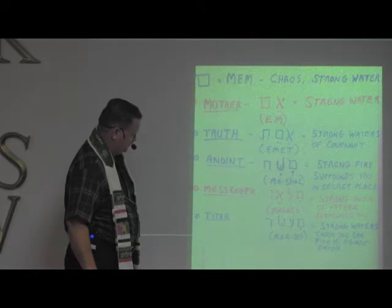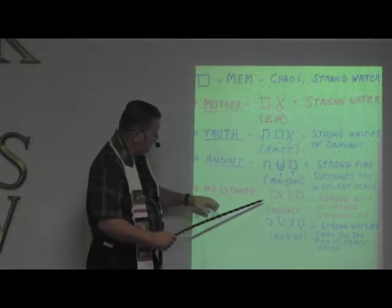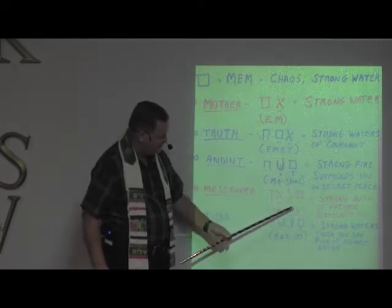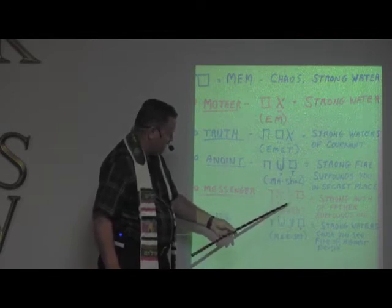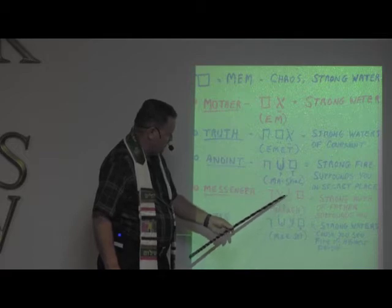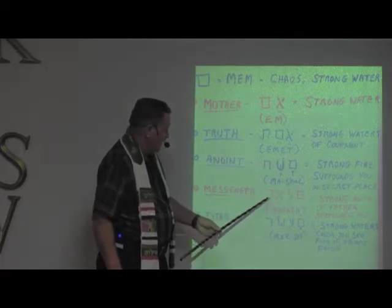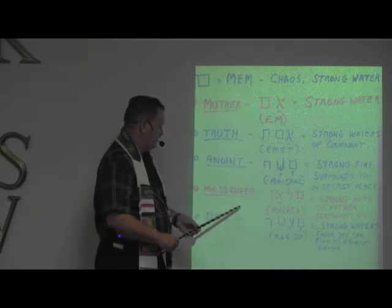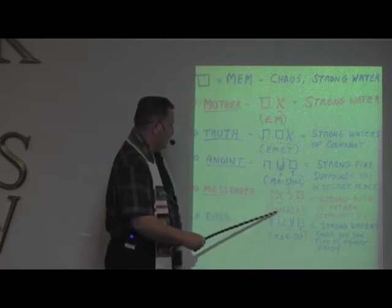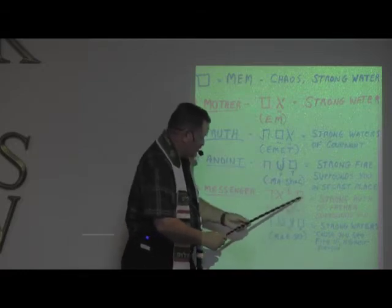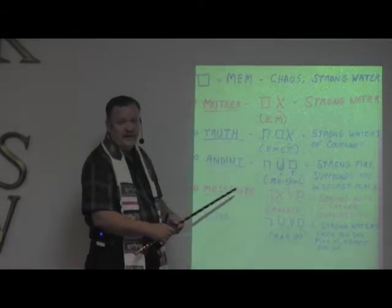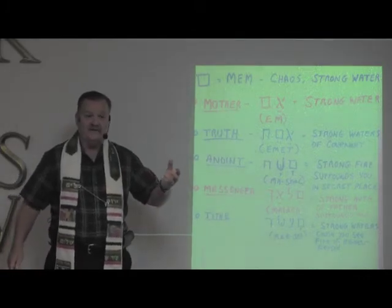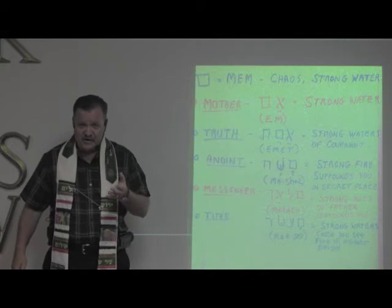The word for messenger — this is a longer word. We have the mem here, which looks like a box. Then we have an A, and then the lamed, which is the L sound and means authority. The aleph here means the father. Then we have the chet at the end. This is pronounced malach — messenger. Strong authority of the father will surround you. We typically think of these as messengers coming in the strong authority of the father.